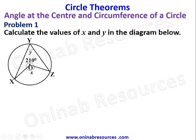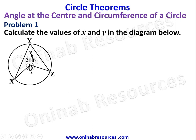For problem one, calculate the values of x and y in the diagram. From the diagram, XZ is the arc of the circle with center O. The angle subtended by the arc at the center is x, and the corresponding angle at the circumference is y. Since both x and y are unknown, we can find x using the principle of angles at a point, which sum to 360 degrees.